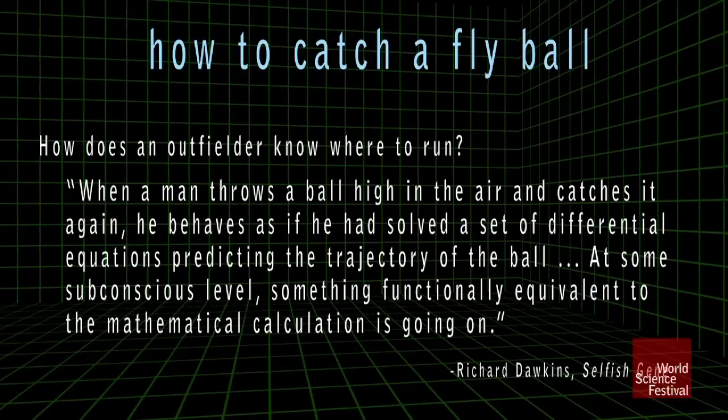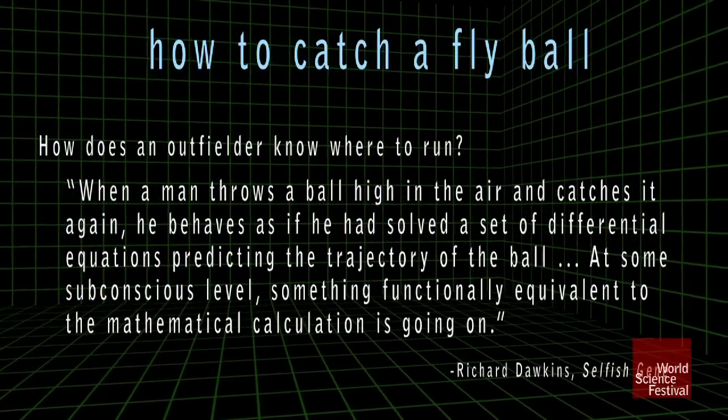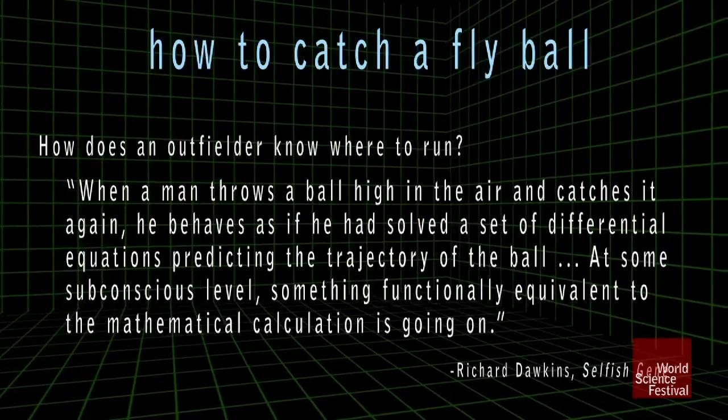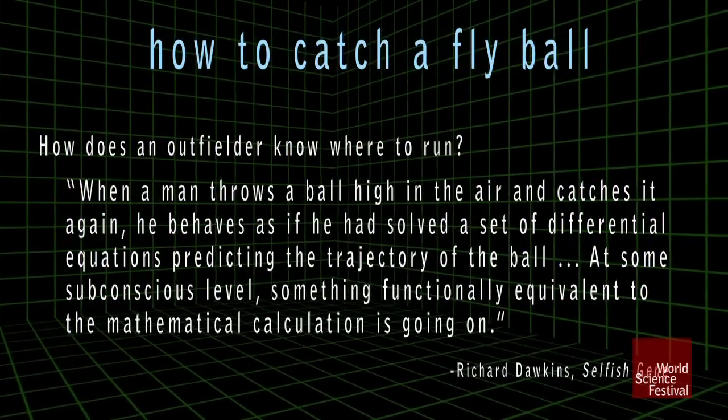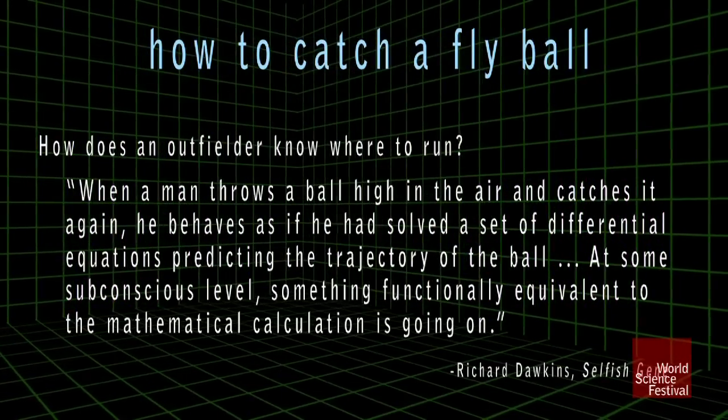Take the task of catching a fly ball. One idea — this is Dawkins, and other psychologists have forwarded this idea — is that the player calculates the trajectory of the ball, knows where the ball is going, and then runs to catch it. As Dawkins puts it: when a man throws a ball high in the air and catches it again, he behaves as if he'd solved a set of differential equations predicting the trajectory of the ball. At some subconscious level, something functionally equivalent to the mathematical calculation is going on. So this line of thought is embracing the complexity of the problem — we're doing calculus, we just don't know it.